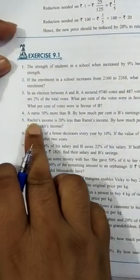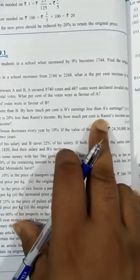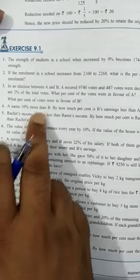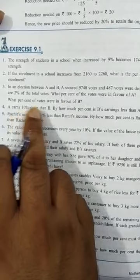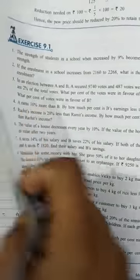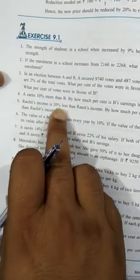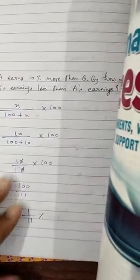Question number 5: Rachit's income is 20% less than Ramit's income. By how much percent is Ramit's income more than Rachit's income? Questions 4 and 5 are similar. In question 4 it was 10% more, so we used X/(100 + X). But in question 5 we have 20% less than, so we will use X/(100 - X) × 100. You will solve it yourself.